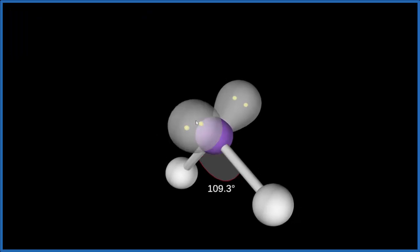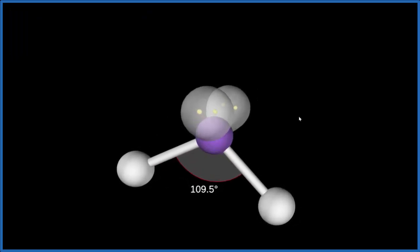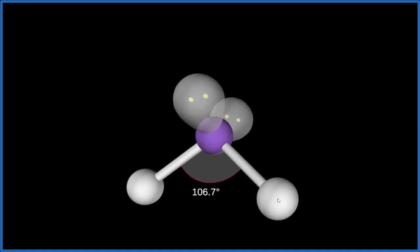We would expect that the ideal bond angle would be 109.5, but lone pairs push down more than other atoms. So these hydrogen atoms are going to be pushed a little bit closer together to give us a smaller bond angle, most likely right around 105 degrees.